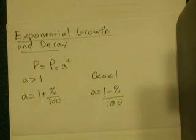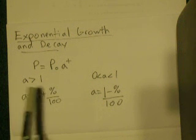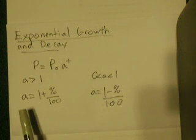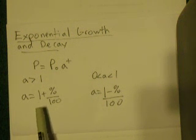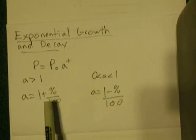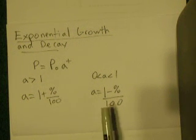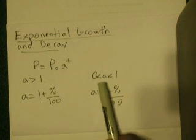If A is greater than 1, then A = 1 + (percentage of growth)/100. When A is